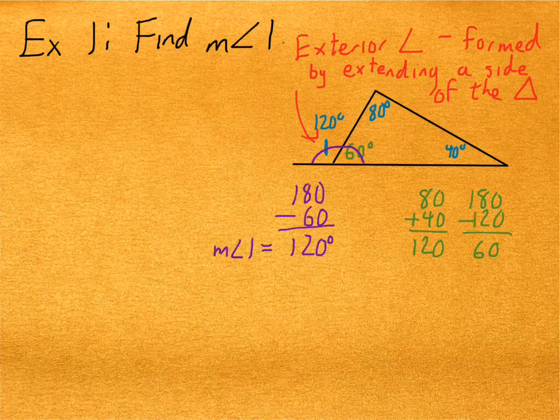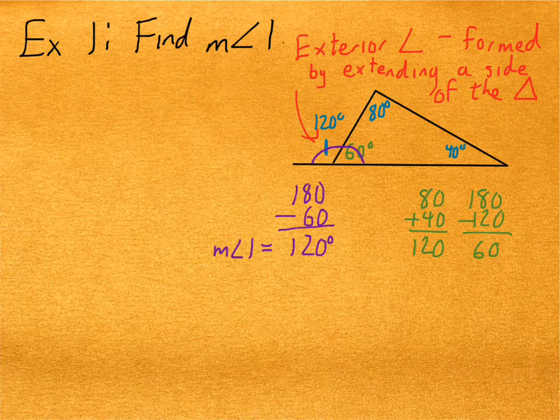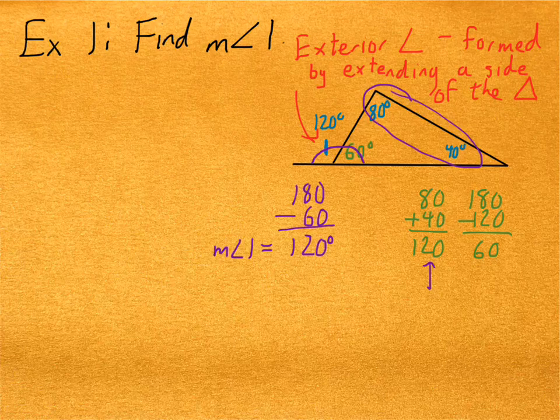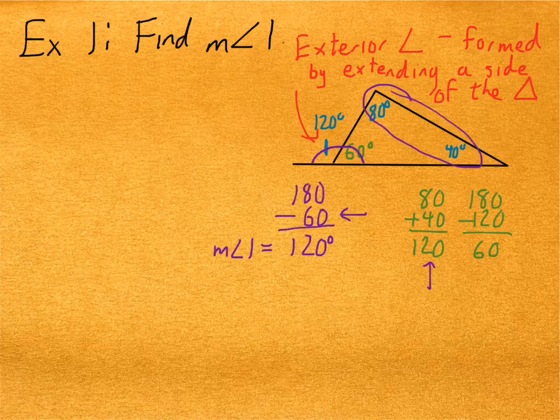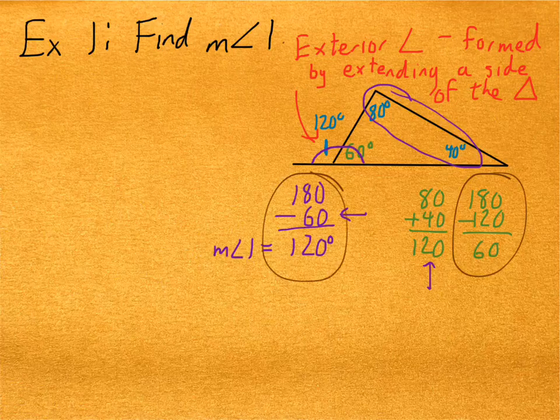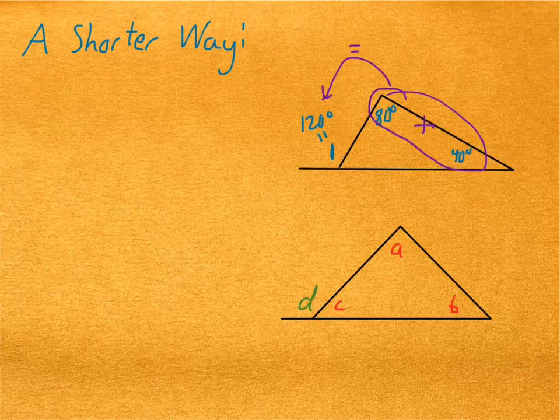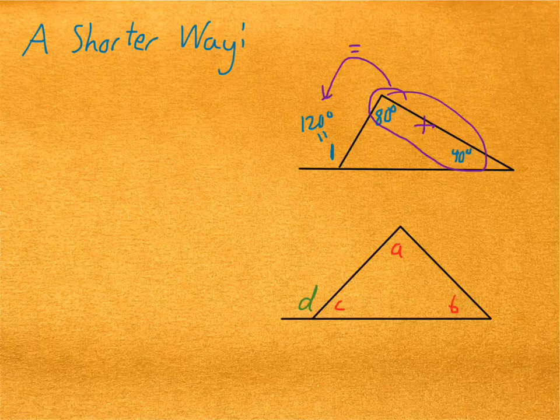Going back to our original example, notice that we got the 120 by adding these two angles together. We subtracted that 120 from 180 to get 60. But then we turned back around and we subtracted the 60 from 180 again to get the 120 back. So no point in doing that extra work, right? These two steps here basically undid each other. We'll call this a shortcut. That's the exterior angle theorem.